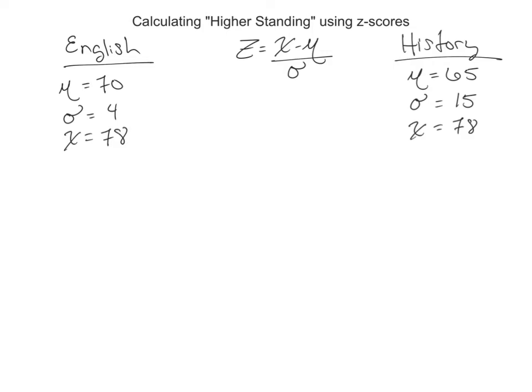In this video, we're going to calculate if you had a higher standing or higher rank with your score of 78 in either your English class or your history class.